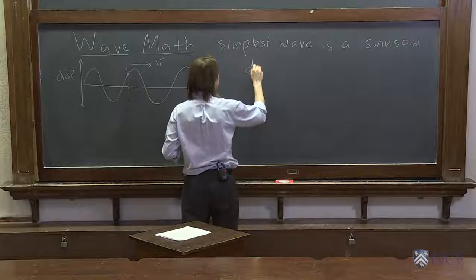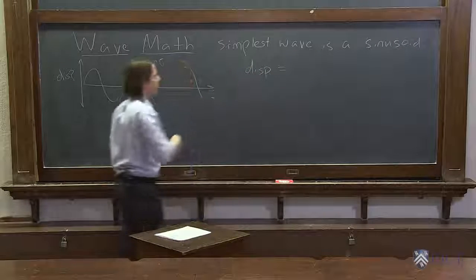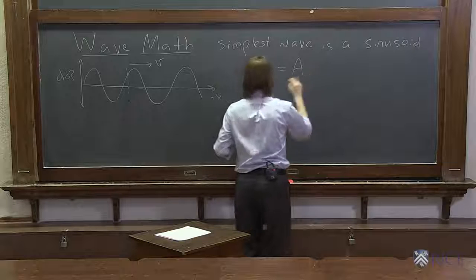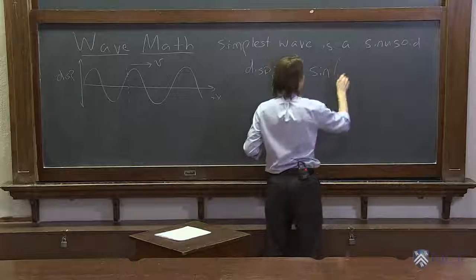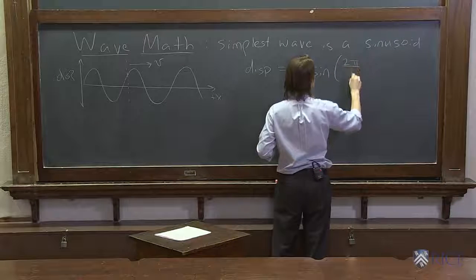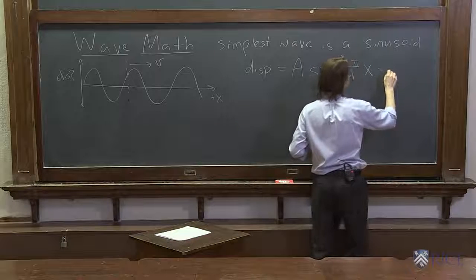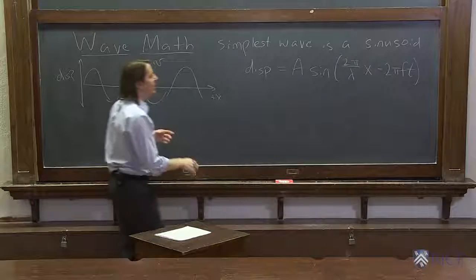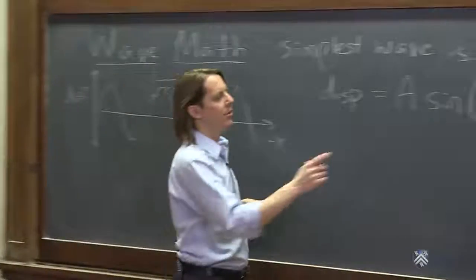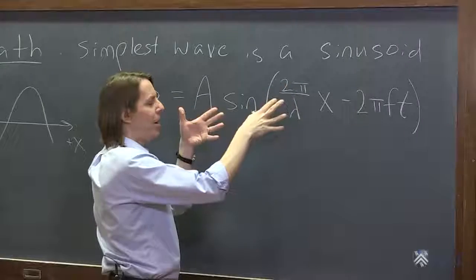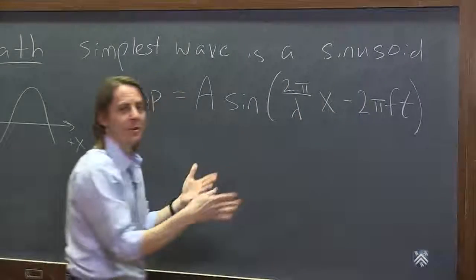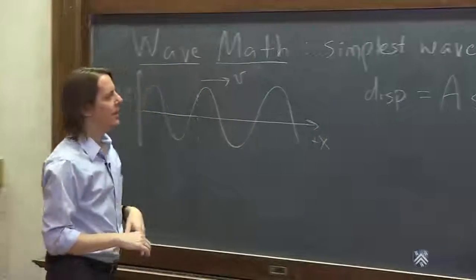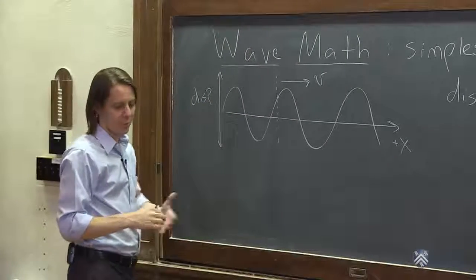If I were to write the function for you, DISP in meters, the function that describes all this wave behavior would look like this: A times sine of (2π over the wavelength times x minus 2π times the frequency times t). To really describe a wave in all of its moving glory requires a function of both position and time. If you plotted this in a computer and made a movie by increasing t, you would see a wave moving to the right.